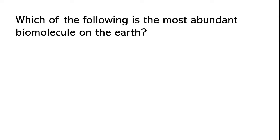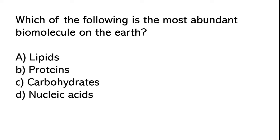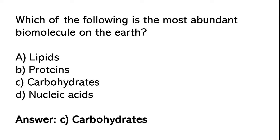Which of the following is the most abundant biomolecule on the earth? Lipids, proteins, carbohydrates, nucleic acid. The correct answer is option C: Carbohydrates. The most abundant biomolecule on the earth is carbohydrates.